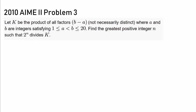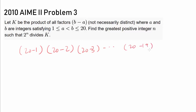So how do we approach this? Well, let's start by listing out every single factor. We are going to start with 20 minus 1, then 20 minus 2, 20 minus 3, all the way to 20 minus 19. Here b is 20 and a goes from 1 up to 19, because a has to be less than b.